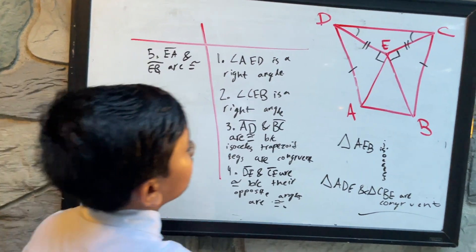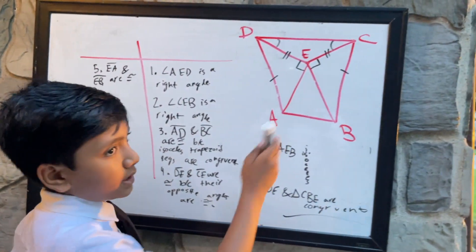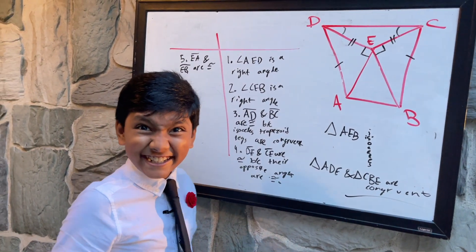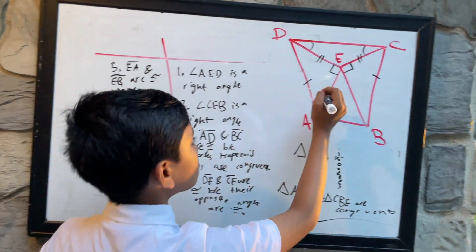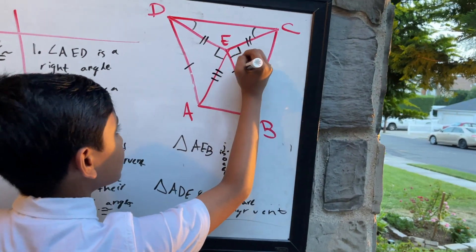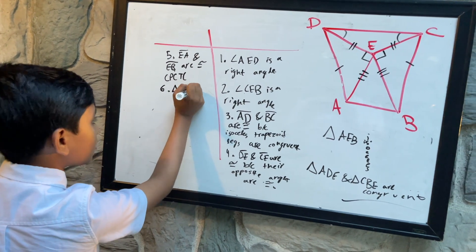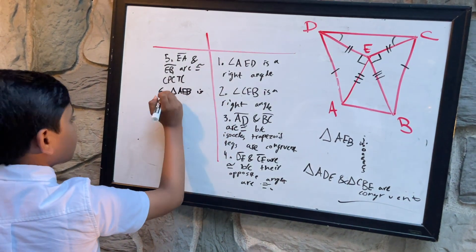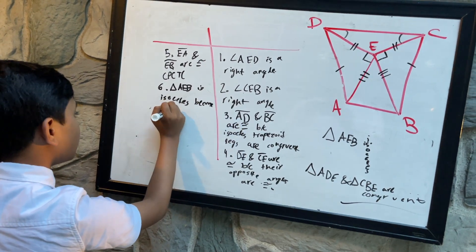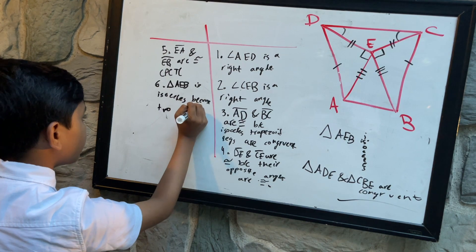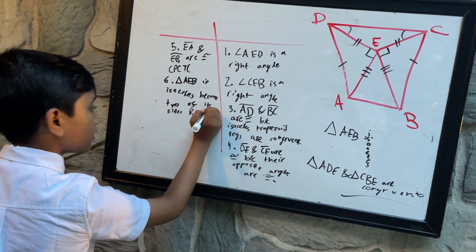The two other corresponding sides of the corresponding triangles are equivalent, so the third side has to be as well by CPCTC. That means these two sides are also equal, and triangle AEB is isosceles because two of its sides are congruent.